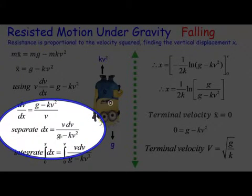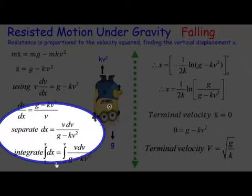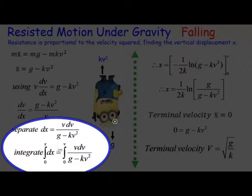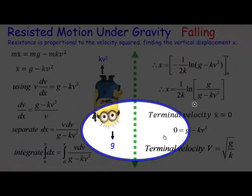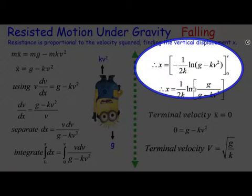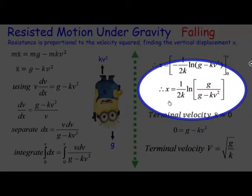Then we integrate from zero to x and from zero to v. You need to hopefully see that that's going to be a log integral, v on the top and v squared on the bottom. Here we are, it's minus 1 over 2k ln of g minus kv squared from zero to v. That's the x, and eventually we end up getting the displacement x is equal to 1 over 2k ln of g over g minus kv squared. So you can see here x is a function of the velocity here.